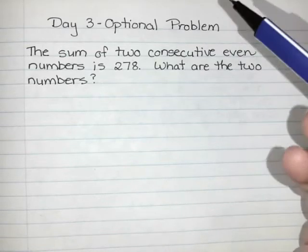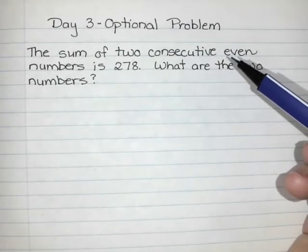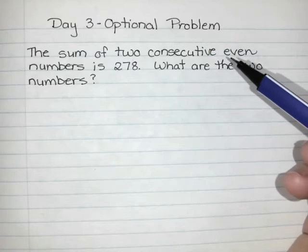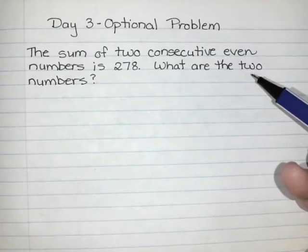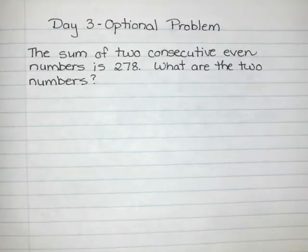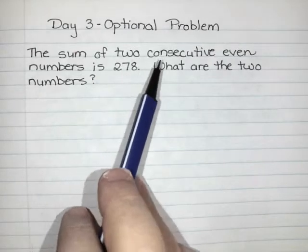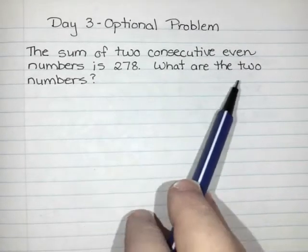This is an optional number problem, just an additional example to help you out if you still aren't quite sure what you're doing after watching the first example. This question is question number three from the practice at the bottom of your handout. The question says: the sum of two consecutive even numbers is 278, what are the two numbers?